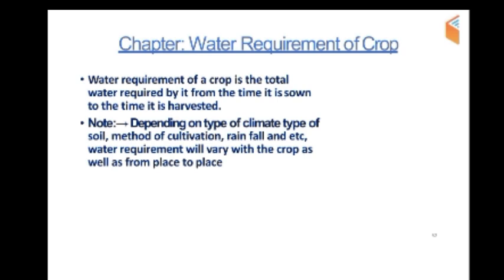Water requirement of a crop is the total water required from the time it is sown to the time it is harvested. When we know the sowing and harvesting period, we know the total water requirement of the crop. Depending on climate, type of soil, method of cultivation, and rainfall, the water requirement will vary with the crop and from place to place.